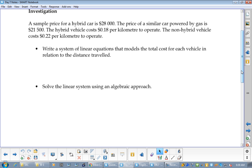Now, we've got the sample price for hybrid cars, $28,000. The price of a similar car powered by gas is $21,500. The hybrid vehicle costs $0.18 per kilometer to operate. The non-hybrid costs $0.22. Write a system of linear equations that models the total cost for each vehicle. This one's not as cut and dry as all the rest. Can somebody even reword this in grade 10 language? What's this even saying? Let's not worry about an equation right now. What's it saying? Let's grade 10 it.